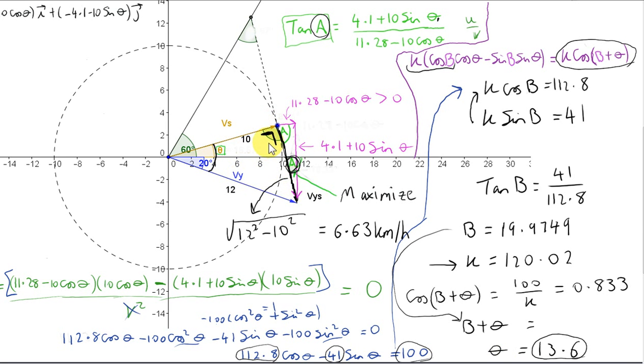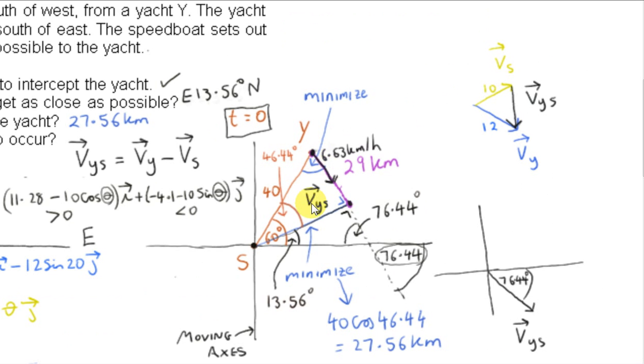So we just want to find this side of this right angle triangle. The hypotenuse is 12. The other short side is 10. So this side is the square root of the hypotenuse squared minus the other side squared. To two decimal places, that's 6.63 kilometers per hour. So that's the magnitude of the vector VYS. So the yacht travels a distance of 29 kilometers at a speed of 6.63 kilometers per hour. Since we're dealing with constant speed, we can use the formula constant speed is distance traveled divided by time taken. V equals D over T. We can rearrange that to get T equals D over V. So we have 29 kilometers divided by 6.63 kilometers per hour. We multiply top and bottom by H to get 4.4 hours.